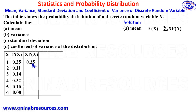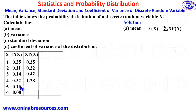So we have: 1 times 0.25 gives 0.25; 2 times 0.11 gives 0.22; 3 times 0.14 gives 0.42; 4 times 0.32 gives 1.28; 5 times 0.10 gives 0.50.